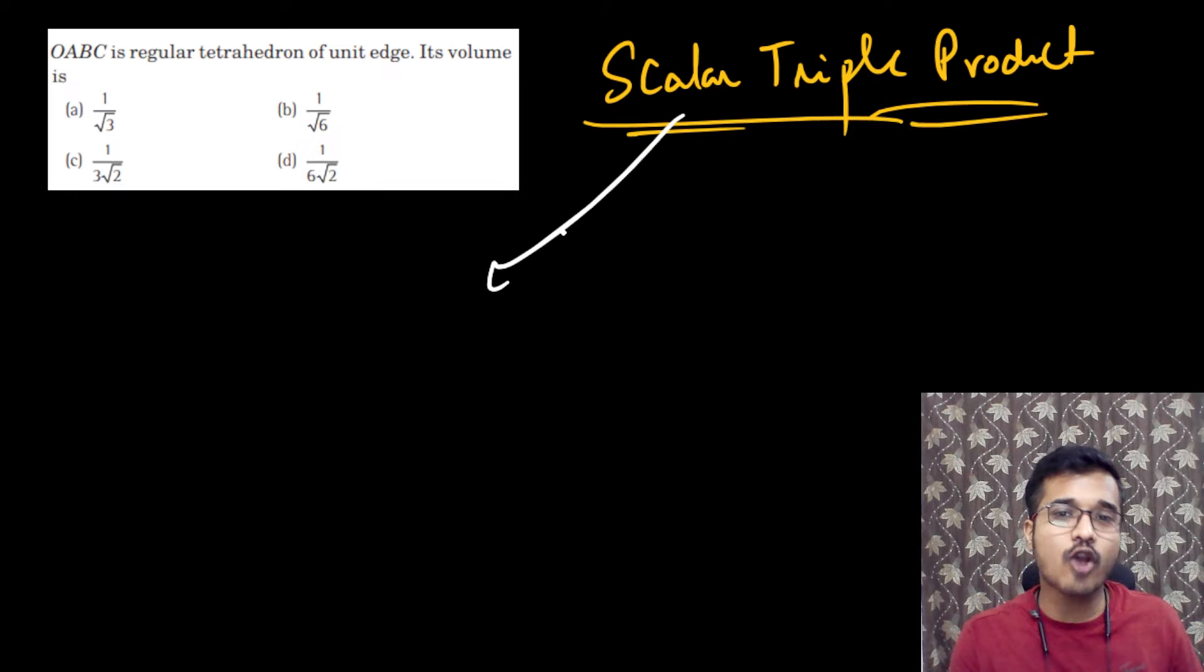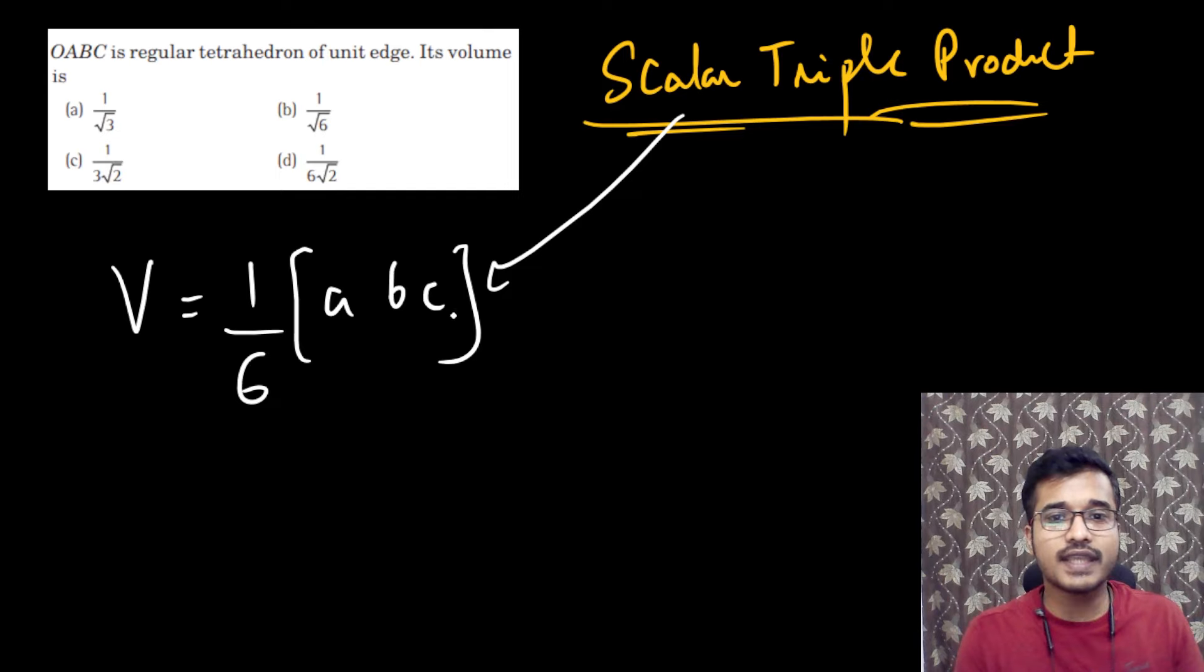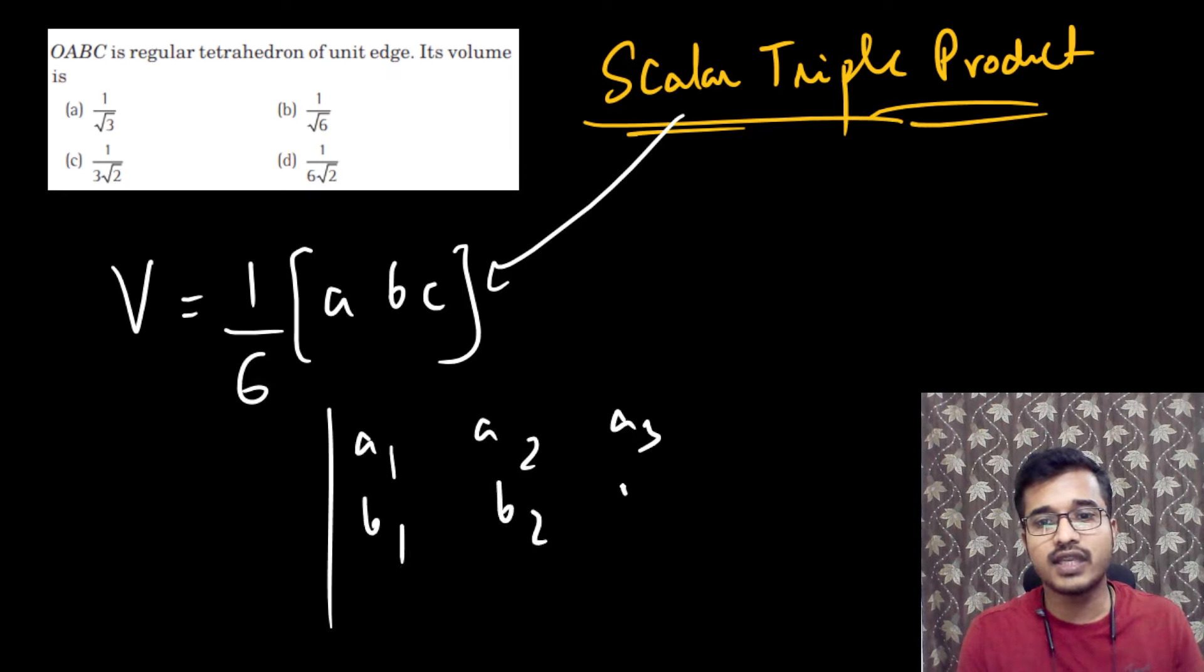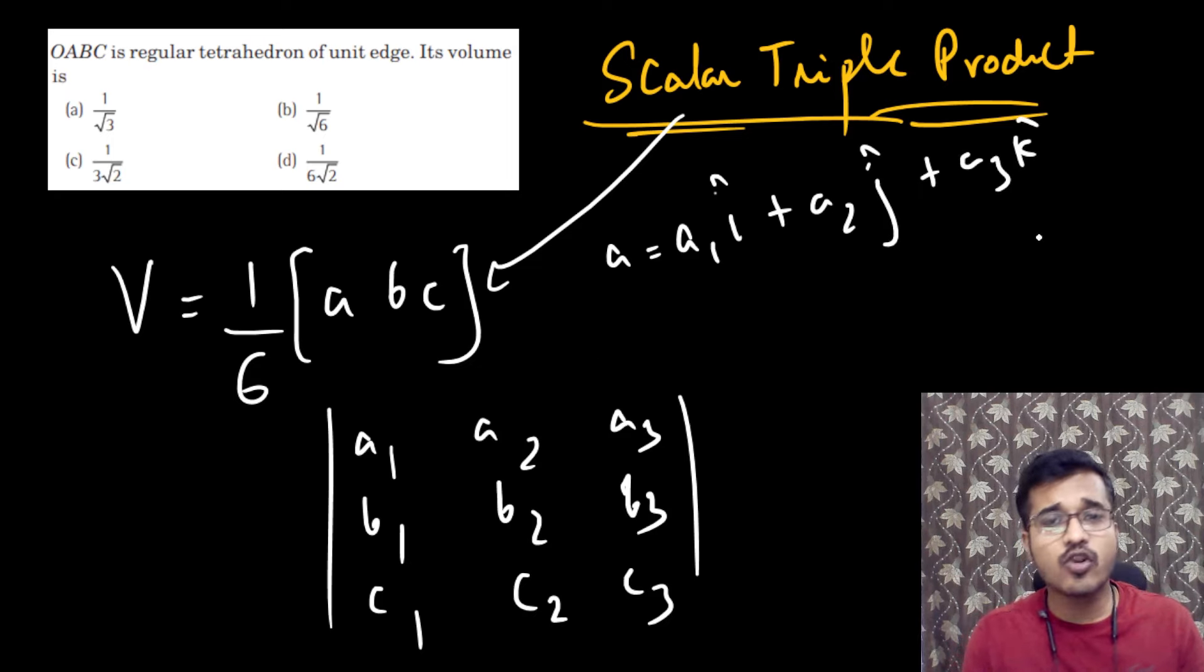Now, if we first look at the normal approach here, basically the volume of tetrahedron will become one by six times A, B, C, simply here scalar triple product. So this A, B, C, it is very easy. You can remove here, either A1, A2, A3, then B1, B2, B3, and here C1, C2, C3. So if there are vectors given here, that A is your A1 i cap plus A2 j cap plus A3 k cap. If you think, if you have given this way, then you can remove the answer here.